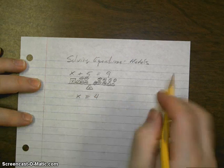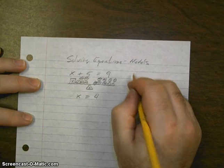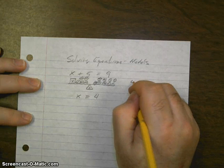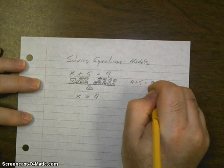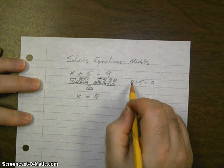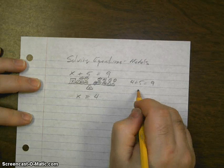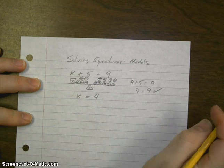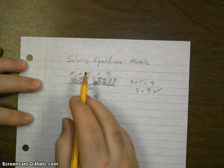To check the answer, plug it back in. 4 plus 5 equals 9. 4 plus 5 is 9, and 9 equals 9. That checks. That is the answer.